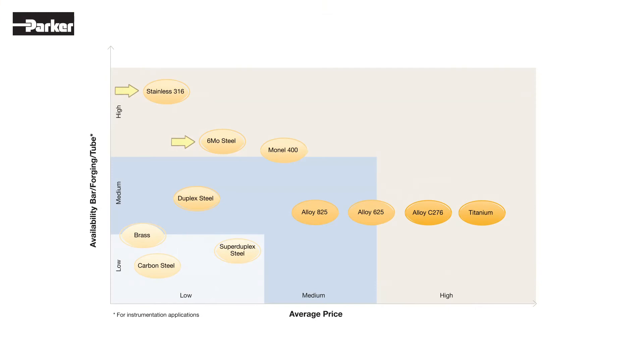In mechanical terms, 6MO is also superior to 316 by approximately 50%. Also, 6MO offers excellent welding properties. The use of 6MO has increased dramatically in the last decades, and this has permitted availability as good as that of 316 and lead times nearly identical. 6MO is available in every form, including tubing, and its intentional chemistry permits stainless steel to be a cost-effective alternative to more expensive nickel alloys.